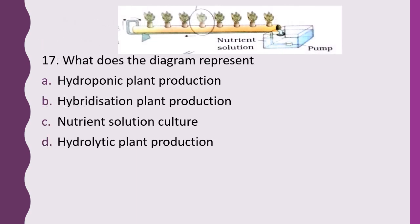Question 17. What does the diagram represent? Options: Hydroponic plant production, hybridization plant production, nutrient solution culture, hydrolytic plant production. The correct answer is option A — it represents hydroponic plant production.